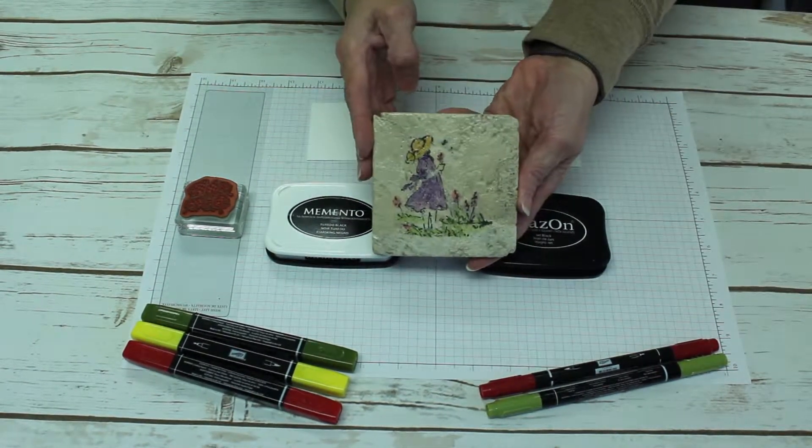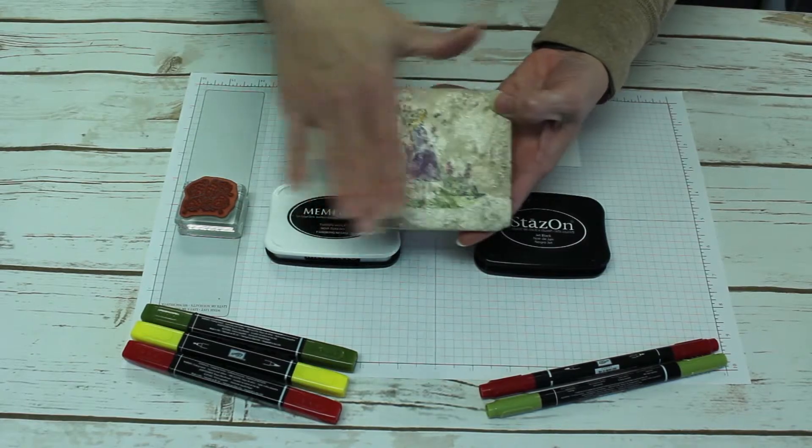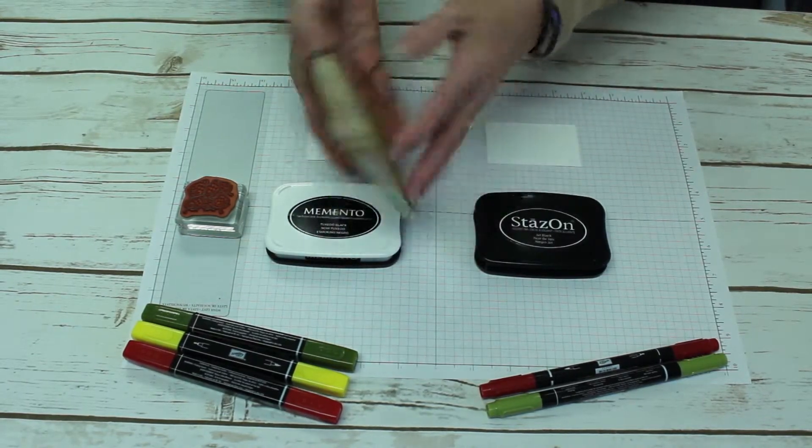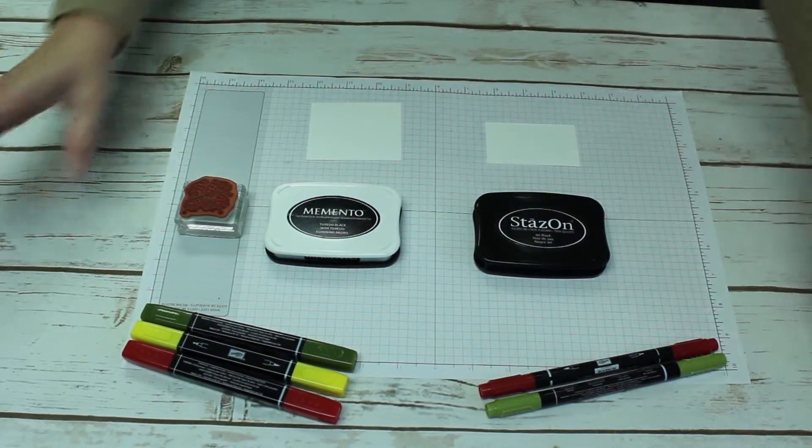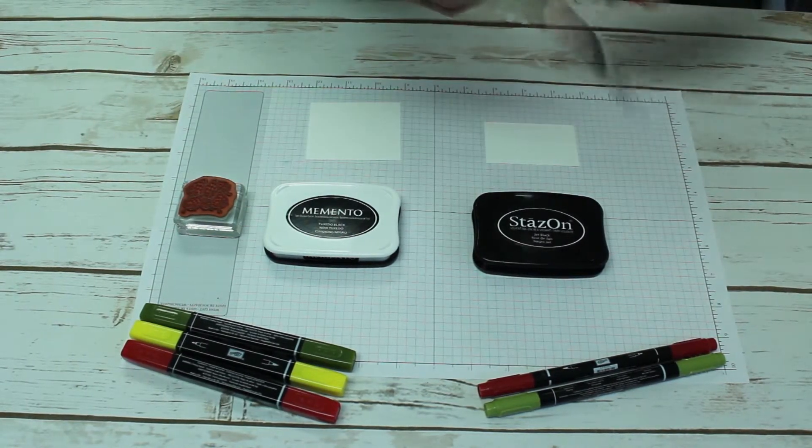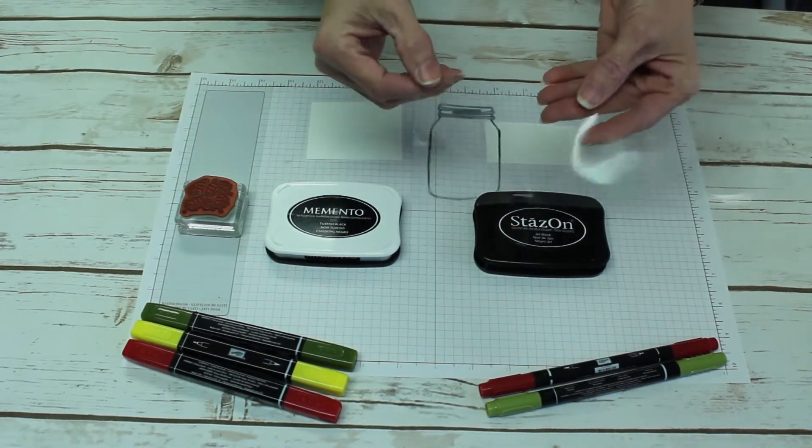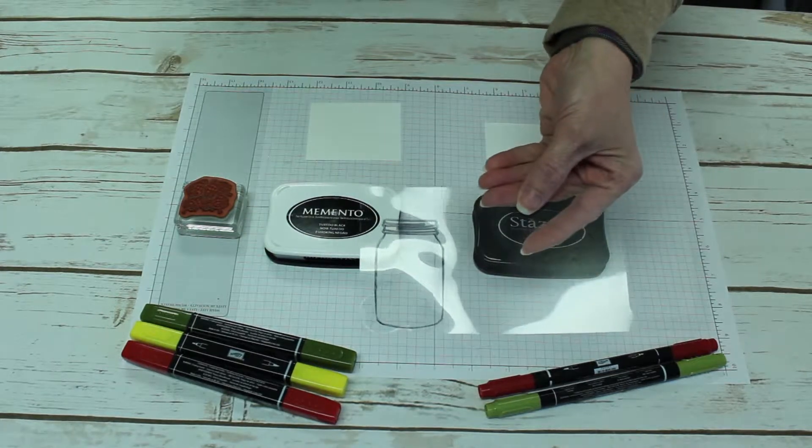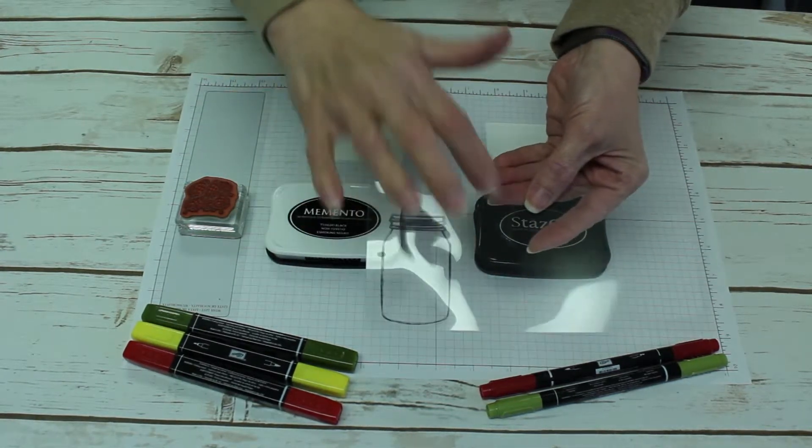You can stamp on the clear window sheets or vellum. In this case, I stamped a mason jar on the window sheet and then I used my heat tool to dry it because solvent-based inks do take longer to dry.